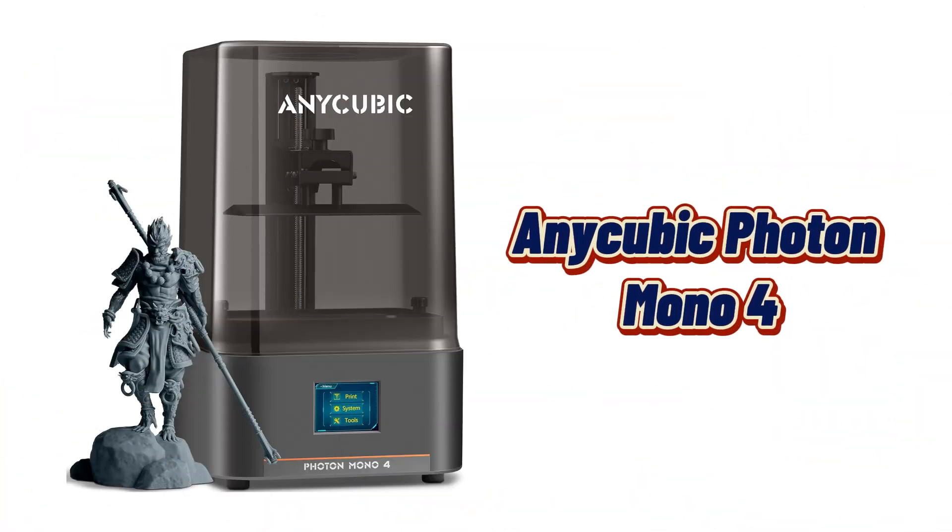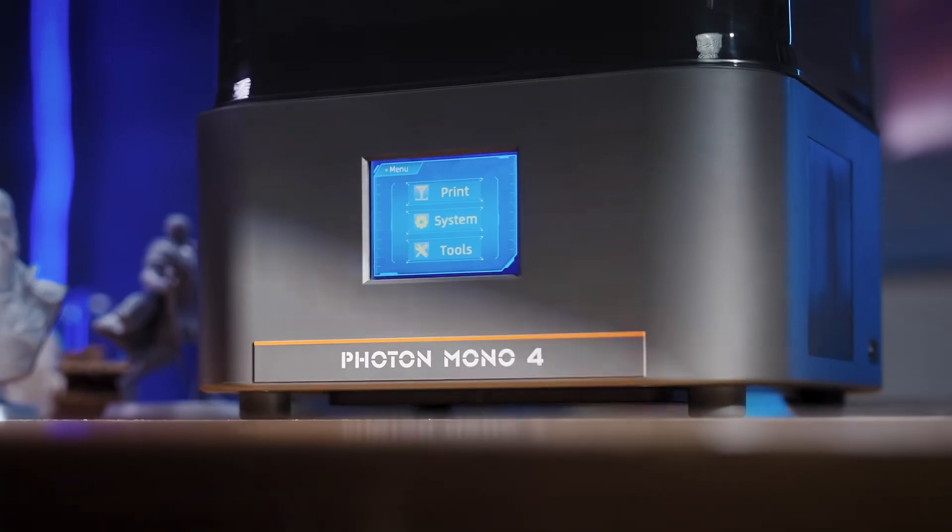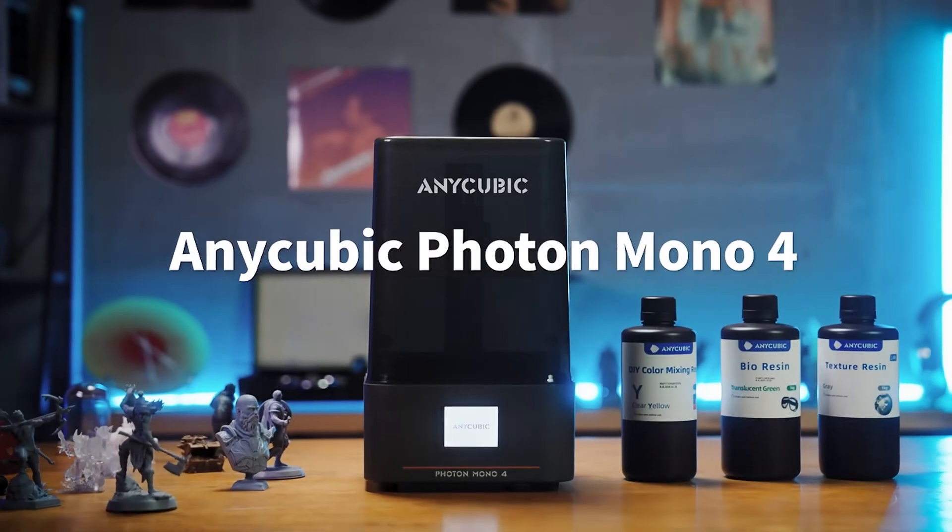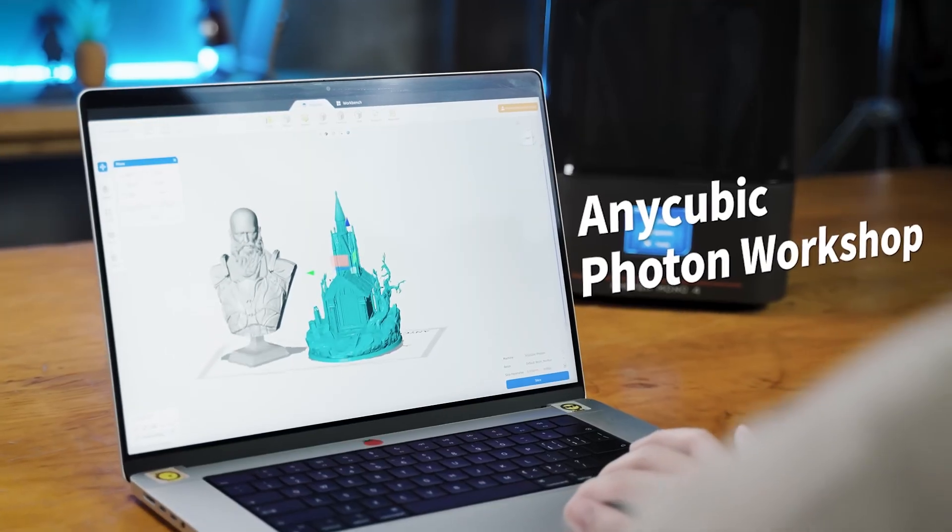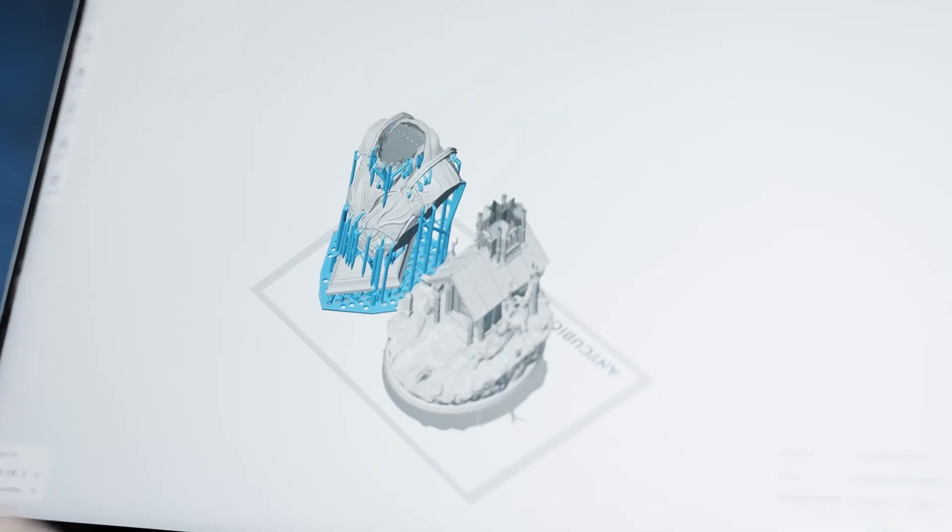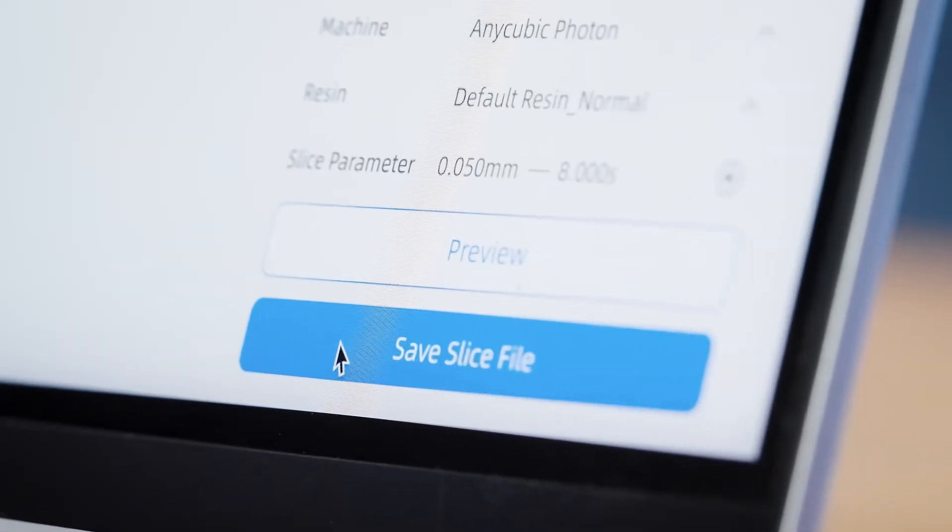Number 2, Photon Mono 4 3D Printer is designed to offer superior resolution and incredible printing performance. With a massive 105% increase in print precision compared to its predecessor, the Photon Mono 2.